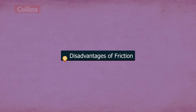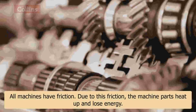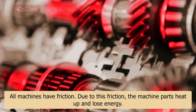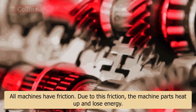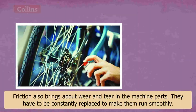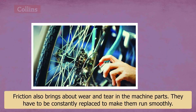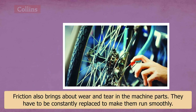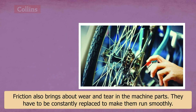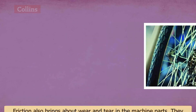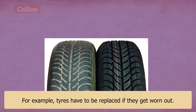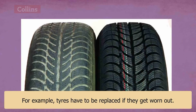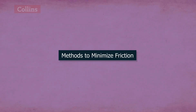Disadvantages of friction. All machines have friction. Due to this friction, the machine parts heat up and lose energy. Friction also brings about wear and tear in the machine parts. They have to be constantly replaced to make them run smoothly. For example, tires have to be replaced if they get worn out.